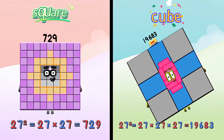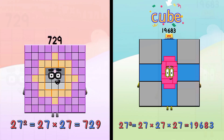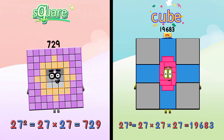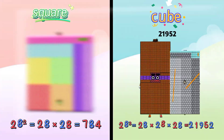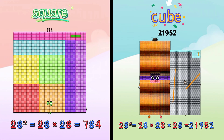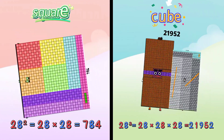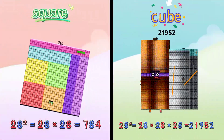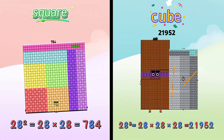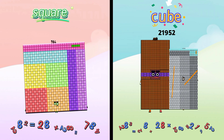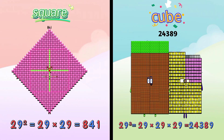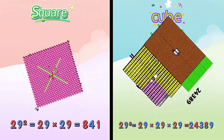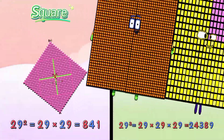Square of 27 is 729, and cube of 27 is 19683. Square of 28 is 784, and cube of 28 is 21952.